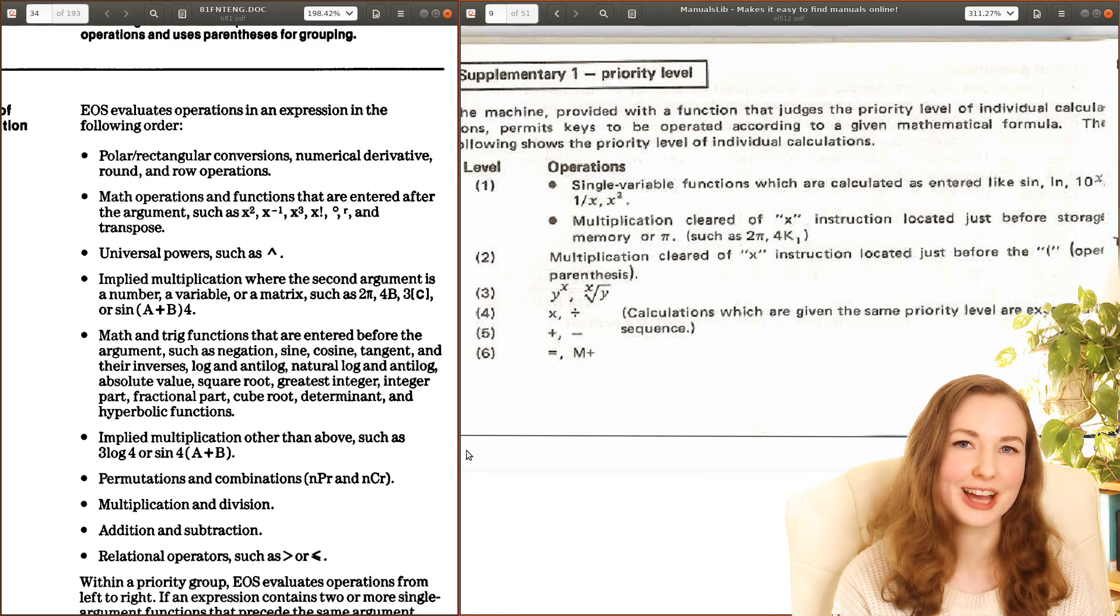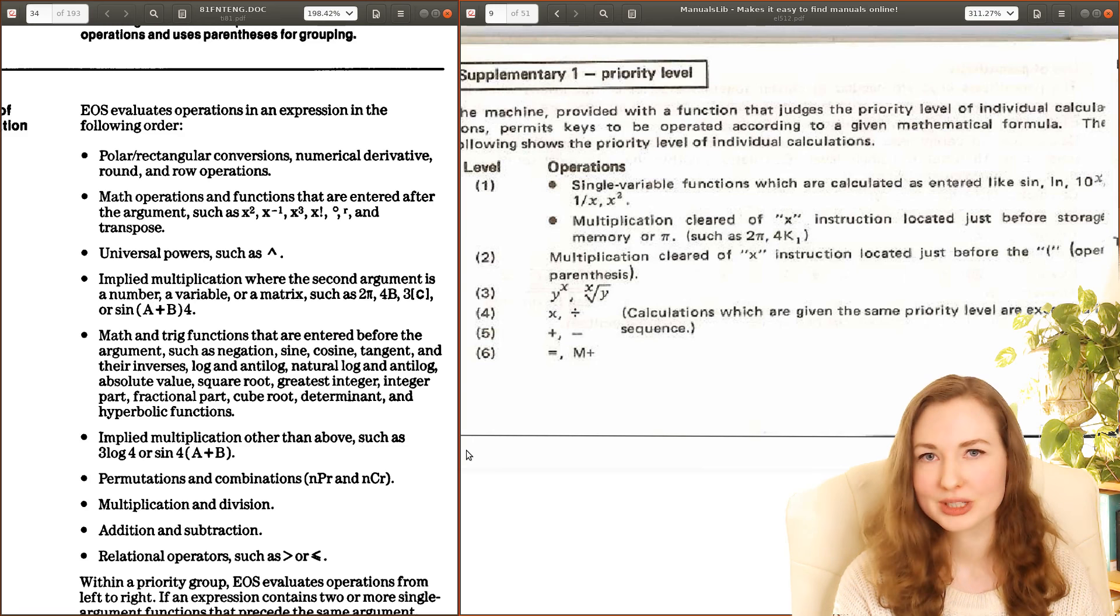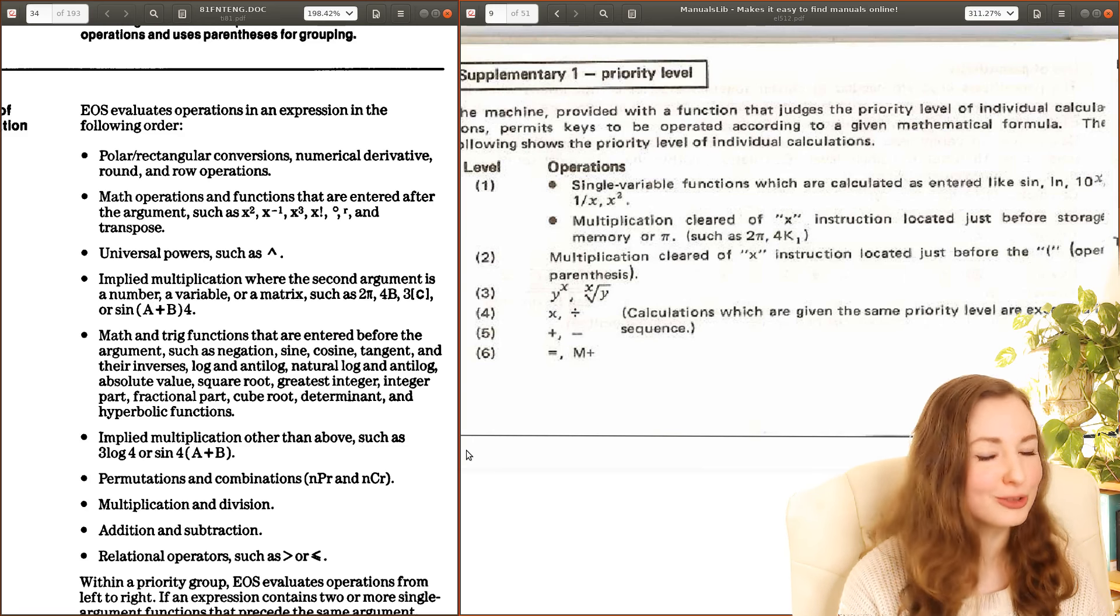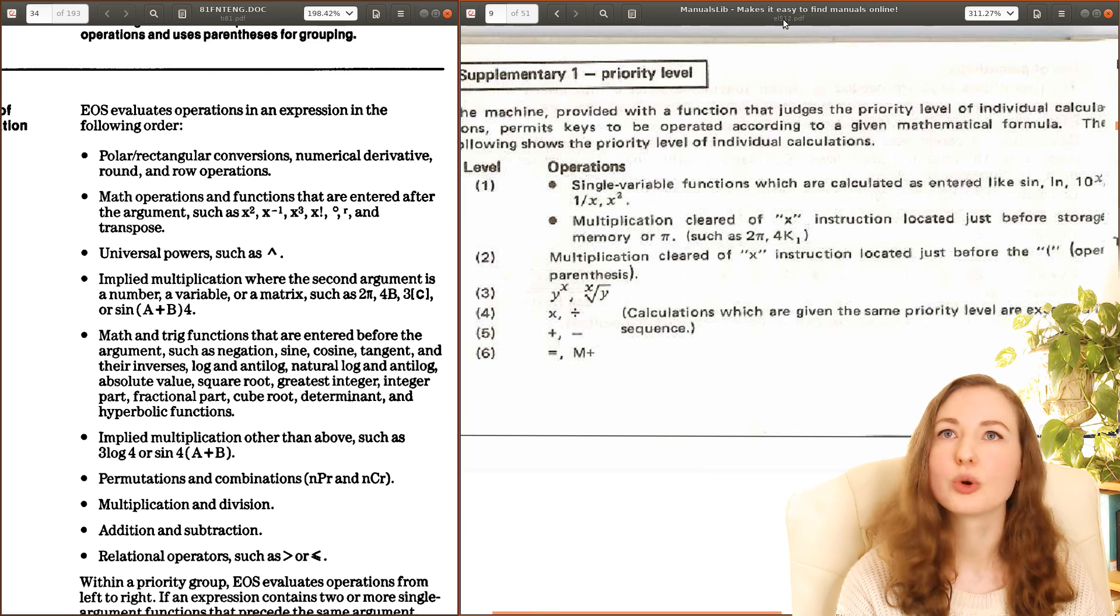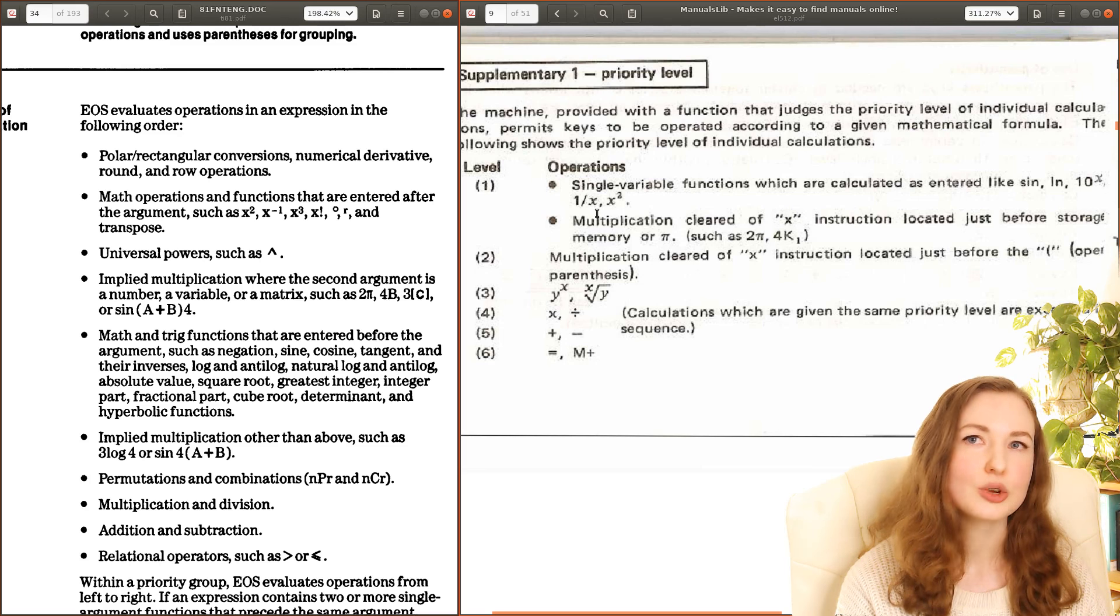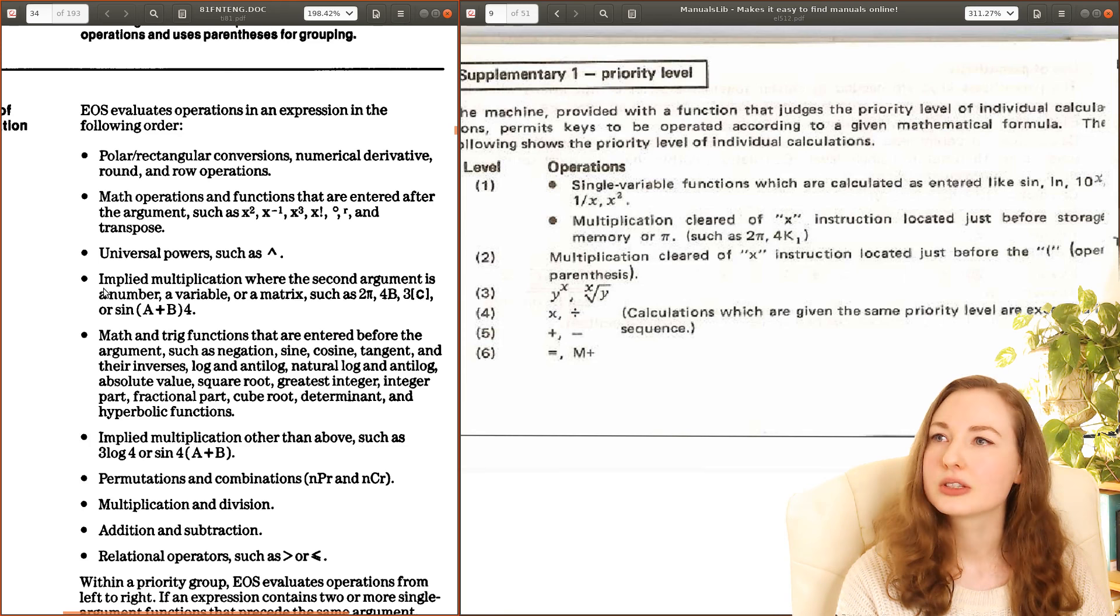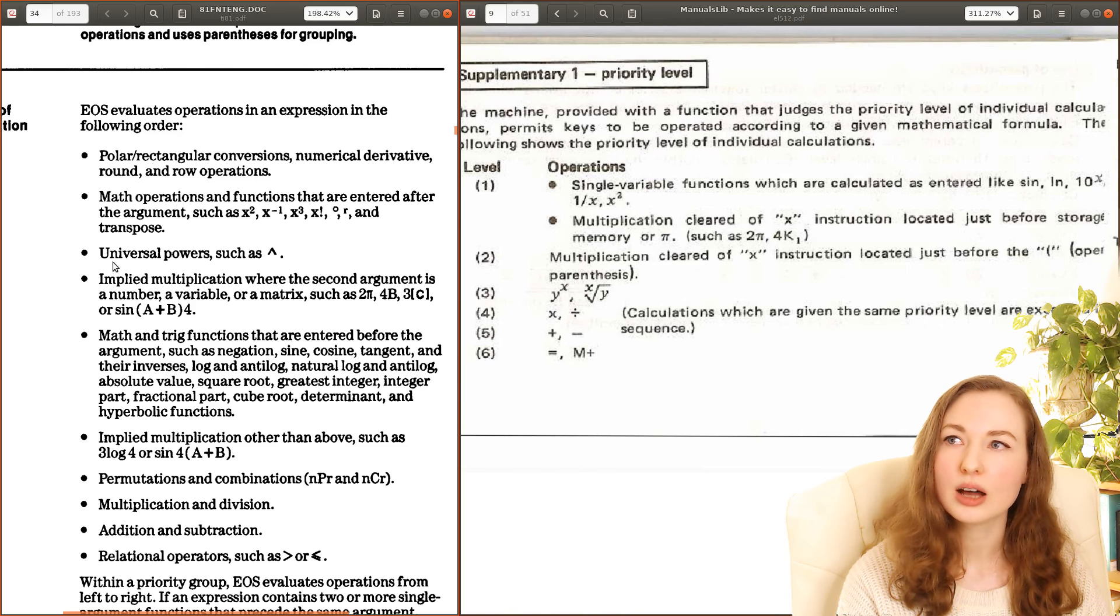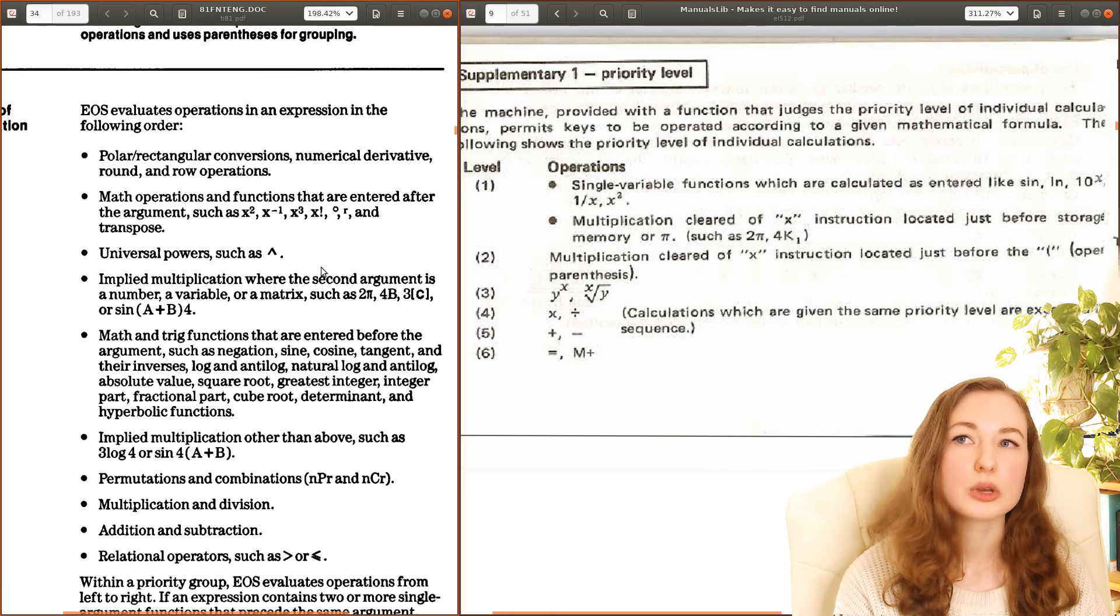In the early days of scientific calculators they didn't actually support multiplication by juxtaposition at all. If you left out the times symbol they just give you a syntax error. Now the earliest one that I could find a manual for online that supports juxtaposition was the EL512, which was released in 1984. This is from Sharp and they say they've got multiplication cleared of X instruction or times instruction, so meaning multiplication where the times symbol has been left out. That's at a higher priority level than normal multiplication and division. And then here's the manual for the TI-81 which was released around 1990, and you can see they've put implied multiplication at a higher level, higher than regular multiplication and division. So both of these calculators are following PEJMDAS.